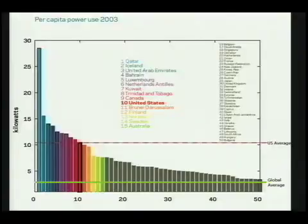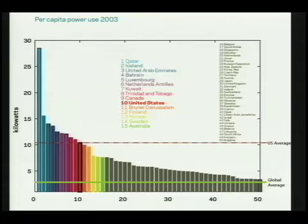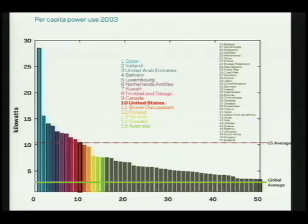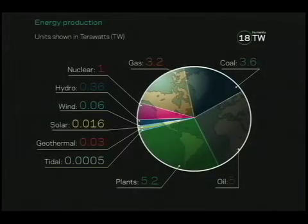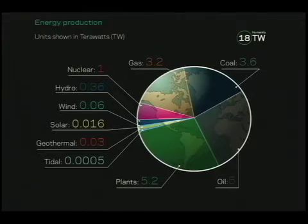17,000 watts — is that a lot? Here's the per capita power consumption for a whole lot of countries in the world. America is in 10th. Canada uses a little more — they're like Americans who live somewhere colder. The US average is about 11.4 kilowatts. The global average is about 2,200 watts. Currently the world uses about 18 terawatts of power. A lot of it is just in plant matter that we burn in the developing world. But largely in industrialized nations, we get our energy from gas, coal, oil, a fair amount from nuclear, and some from hydro.